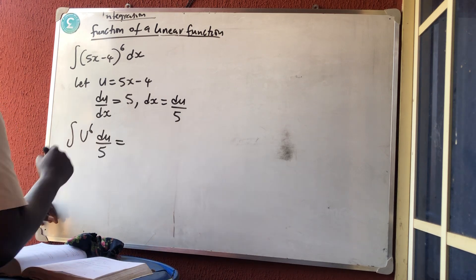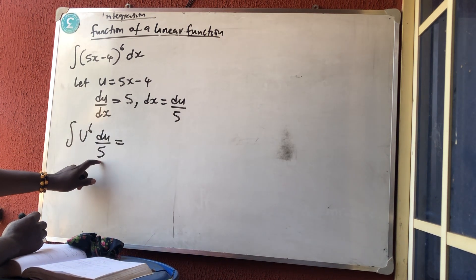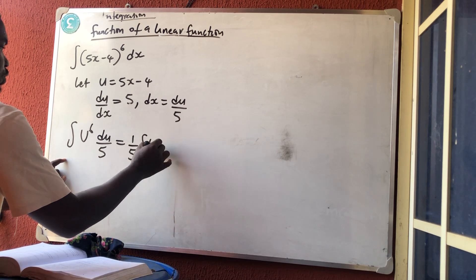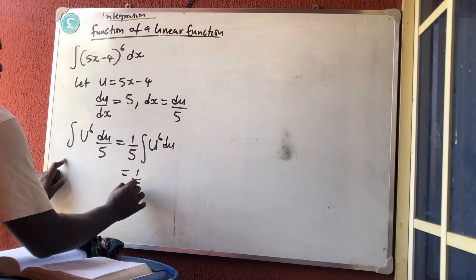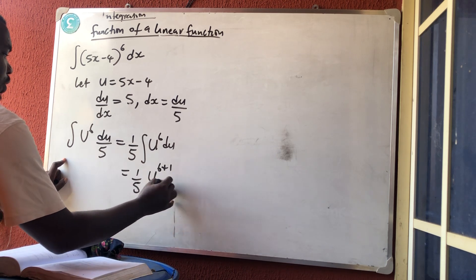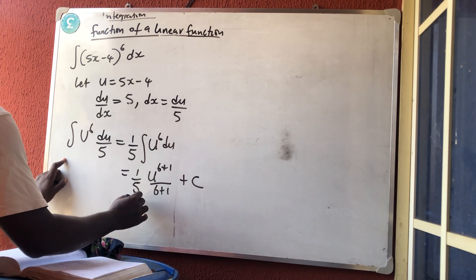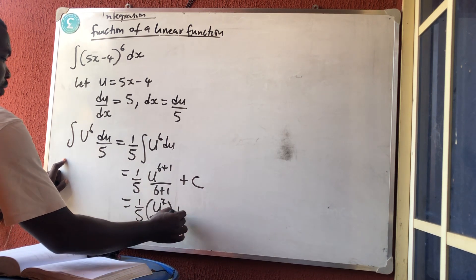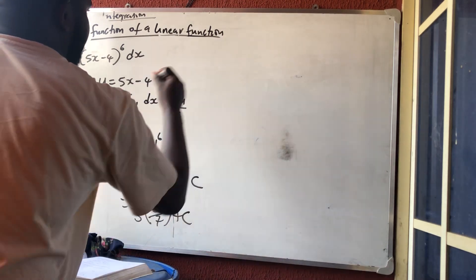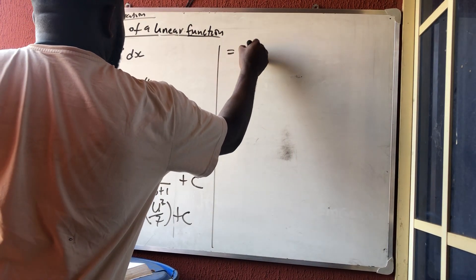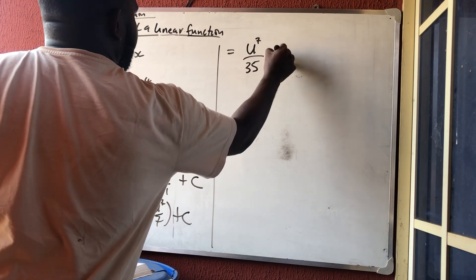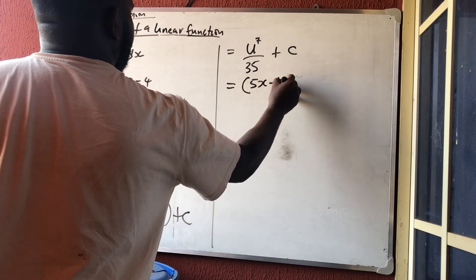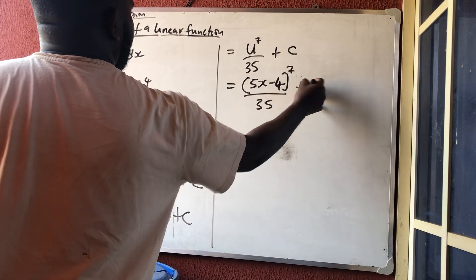Bring the 1/5 outside, because in integration we bring constants outside. We now have 1/5 times the integral of u⁶ du, which gives 1/5 · u⁷/7, plus a constant. That simplifies to u⁷/35 plus a constant. Substituting back, u = 5x − 4, so the answer is (5x − 4)⁷/35 plus a constant.